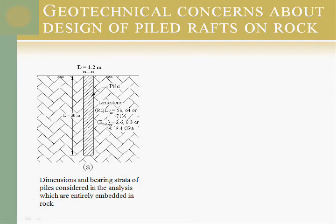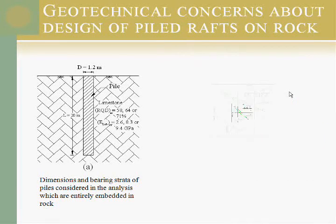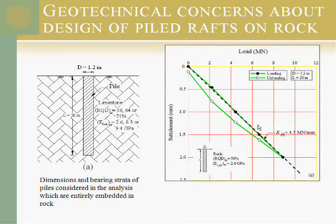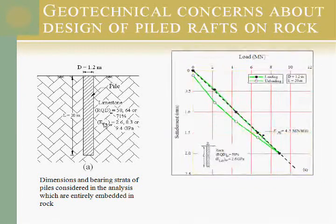To calculate the spring pile constant, we can go to the pile load test and using the load we can take the slope. This range can be 9 MN per millimeter. If we go for another RQD, we can reach 4.5 for the same pile which is embedded in the rock. So this range can depend and can affect the results of the design.